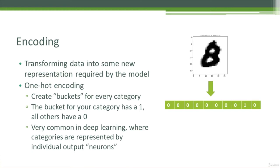The idea is that I create a bucket for every category that I have, and basically I have a one that represents that that category exists, and a zero that represents that it's not that category. Let's look at this picture as an example. Let's say that I'm building a deep learning model that tries to do handwriting recognition on people drawing the numbers zero through nine. This is a very common example that we'll look at more later.